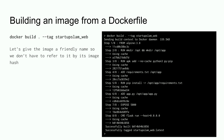When we built the image, we just got a hash at the end, which isn't great to work with. If you ran `docker image ls`, you'd see a bunch of hashes with no idea what they are. We can add friendly names to images by adding a tag to the build command: `docker build . --tag startup_slam_web`. That gives the image a human-readable name.